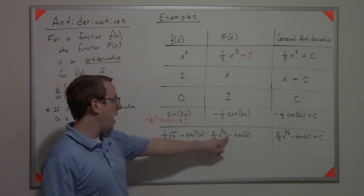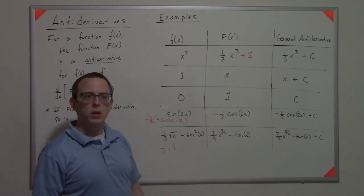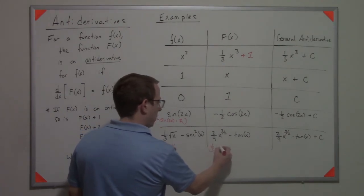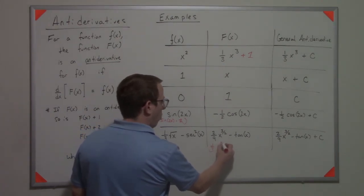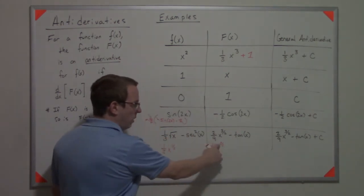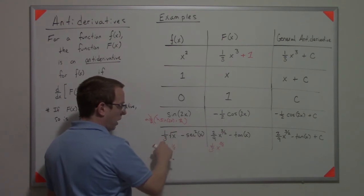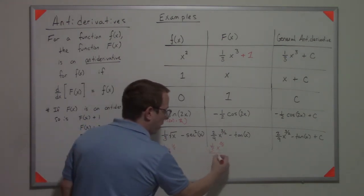So I have to add three-halves. If I add one to get three-halves, I know when I take this thing's derivative I've got to get to here. So if I divide by the power, I'm going to get this two-ninths.